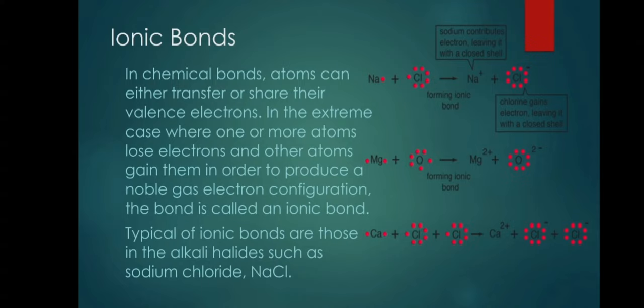Ionic bonds: atoms can either transfer or share their valence electrons. In the extreme case where one or more atoms lose electrons and other atoms gain them to produce a noble gas electron configuration, the bond is called an ionic bond. Typical of ionic bonds are those in the alkali halides, such as sodium chloride or NaCl. That is an example of ionic bonding, as you can see on your screen. Sodium contributes an electron, leaving it with a closed shell. Because of that, there is a formation of ionic bonds, wherein chlorine gains an electron, leaving it with a closed shell. There is a transfer of valence electron.